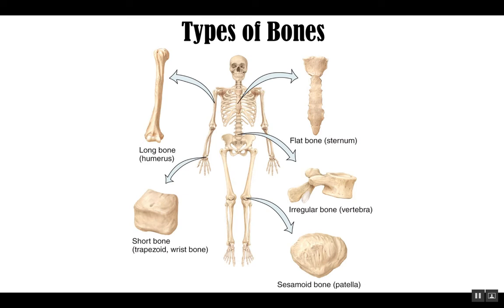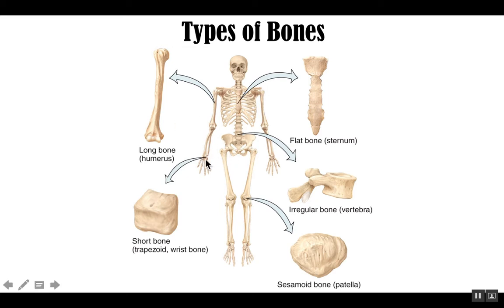Let's begin by talking about basic types of bones, categorized largely based on shape. Long bones are longer than they are wide and are typically found in your appendages — your arms and legs. Short bones, as the name suggests, are kind of cube or block shaped. We'll look at a lot of short bones in the wrist — your carpals. There are eight carpals in your wrist and they're all classified as short bones.